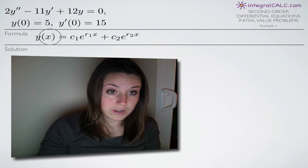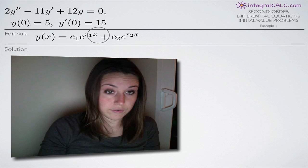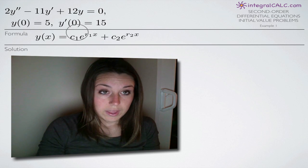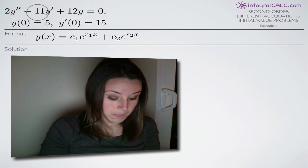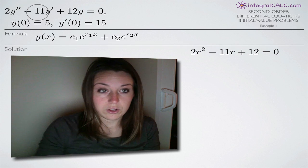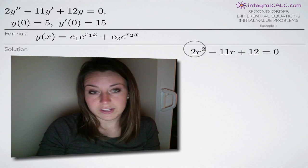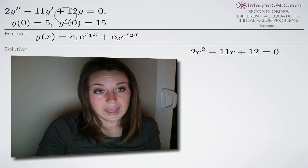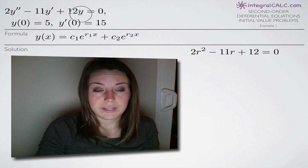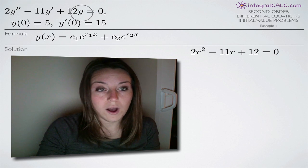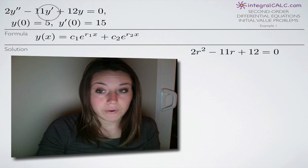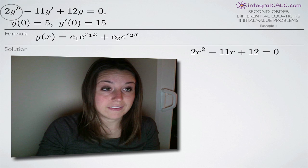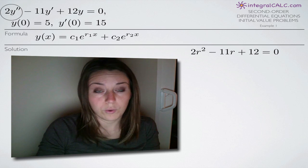The first thing we're going to do is solve for r sub 1 and r sub 2. The way we do that is convert our original equation to one with r's instead of y's. If we have y, we treat it as 1. If we have y prime, we treat it as r. And if we have y double prime, we treat it as r squared.